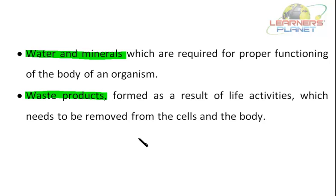Oxygen is mainly transported by the circulatory system, in which red blood cells play a very important role. They contain a special pigment known as hemoglobin, which plays an important part in the transport of oxygen. When blood passes through the lungs, oxygen diffuses from the lungs into the blood, and is then transported by red blood cells to other parts of the body. As blood passes other cells, it gives up the oxygen to those cells undergoing respiration.